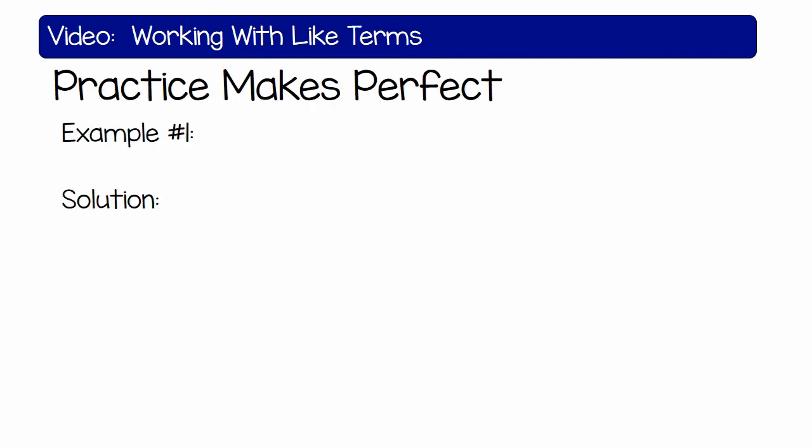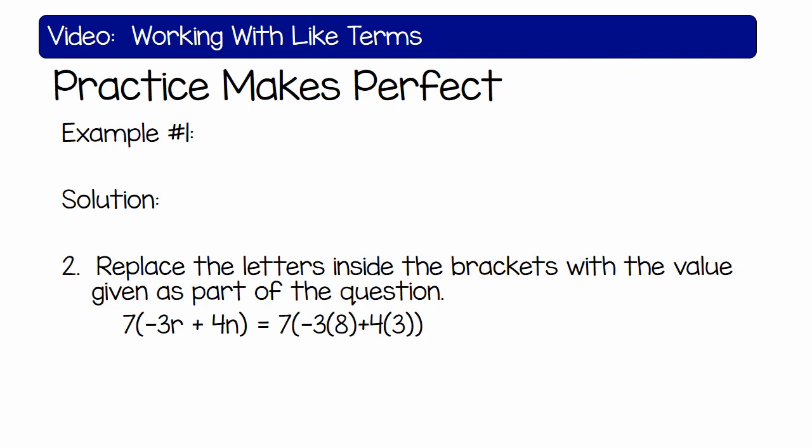Let's take a look at the solution. Number one: write the expression 7 times in bracket minus 3r plus 4n. After we replace the letters inside the brackets with the values given, 7 times negative 3r plus 4n would be 7 times negative 3 times 8 plus 4 times 3.